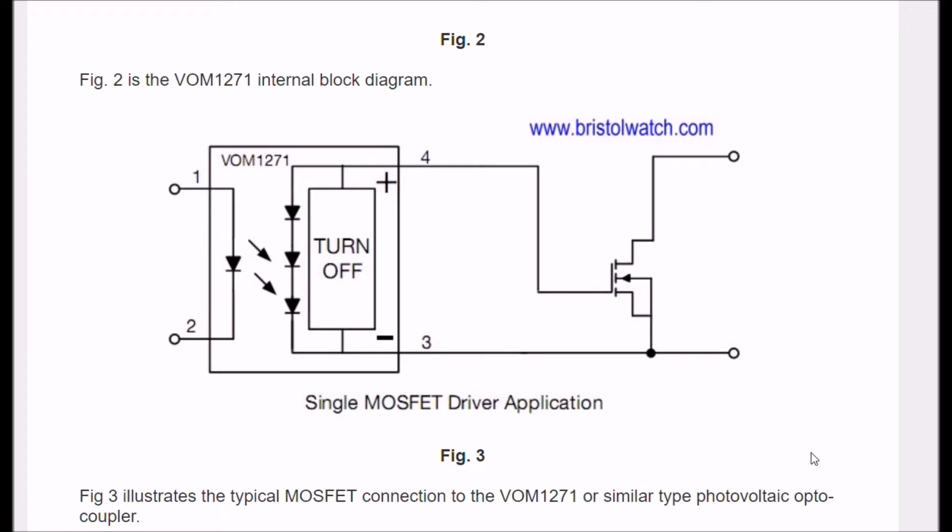Alright, here's the VOM-1271 connected to an N-channel MOSFET. The plus goes to the gate, the minus goes to source, and that's it. You don't need any gate bleeder resistors, nothing. It's all internal. And it works the same way on different types of MOSFETs or IGBTs.